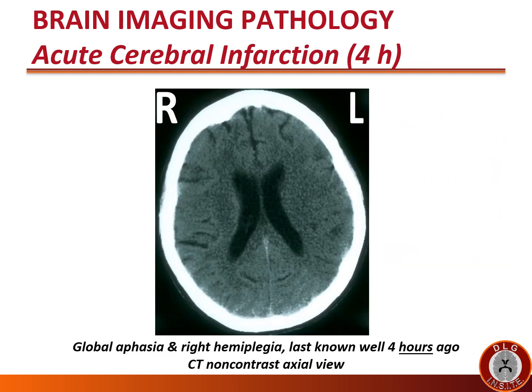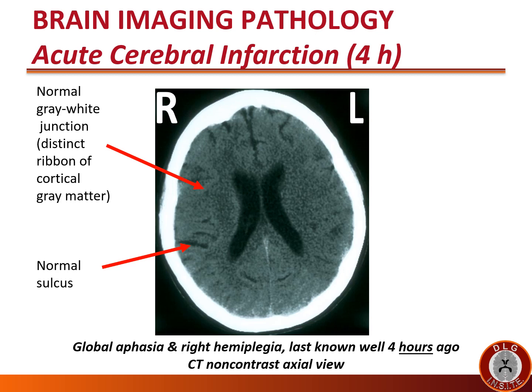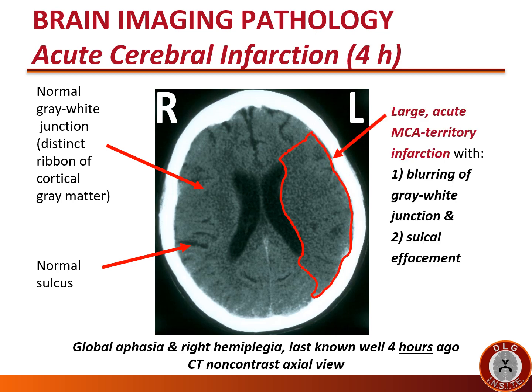This non-contrast CT is from a patient who presented four hours after developing global aphasia and right hemiplegia. Given these deficits, we expect a left cerebral infarction. On the normal right side, one can see the normal gray-white junction — the distinct ribbon of cortical gray matter lighter in color than the subcortical white matter — and normal sulci. The affected left side already at four hours shows a large acute MCA territory infarction with blurring of the gray-white junction and sulcal effacement.